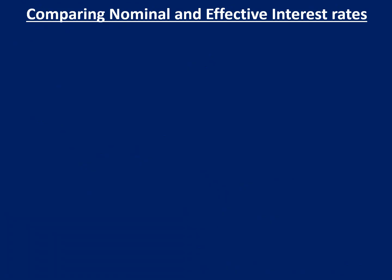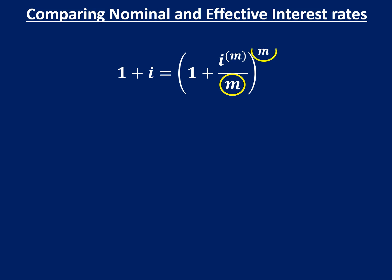You might be asked to compare nominal and effective interest rates — in other words, the bank quotes you 12%, but how much are you actually earning? You're actually earning 12.68% if you compound monthly. The formula compares two interest rates. On the right-hand side, the n values represent the number of compoundings: if monthly, both n values are 12; if quarterly, both are 4. They must match. The number of years is irrelevant in this calculation. The M in brackets is a label indicating the nominal interest rate, while the I on the left-hand side is the effective interest rate.